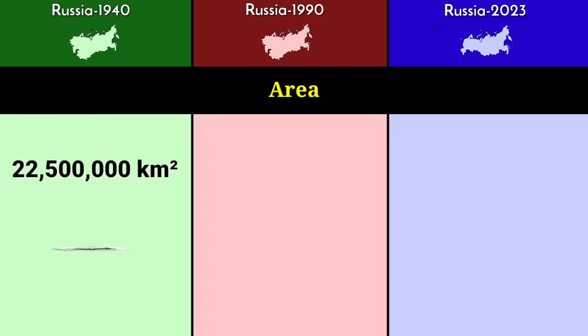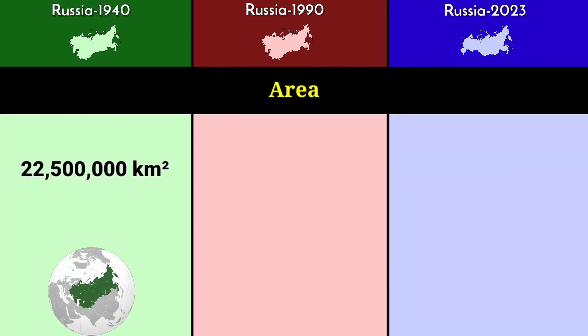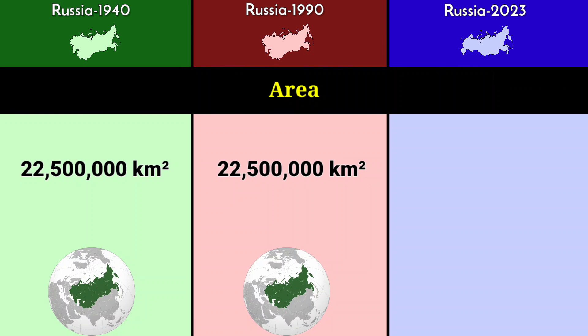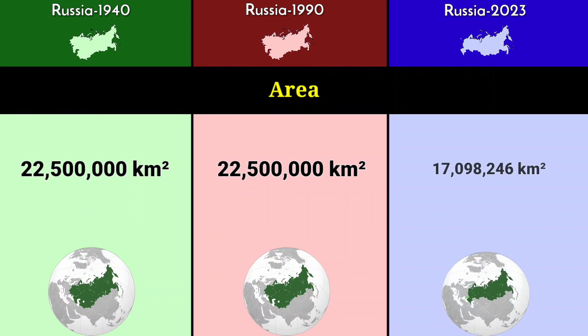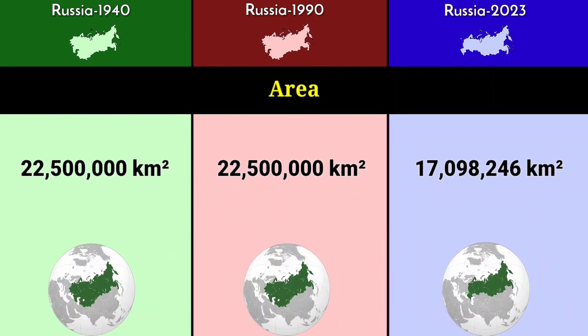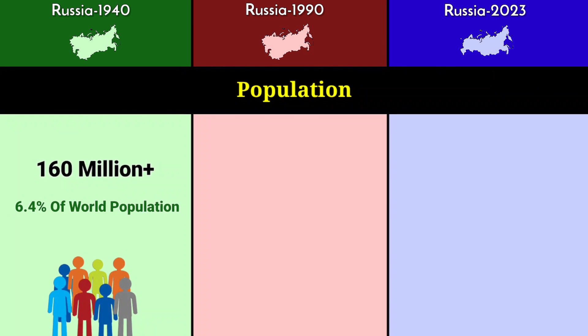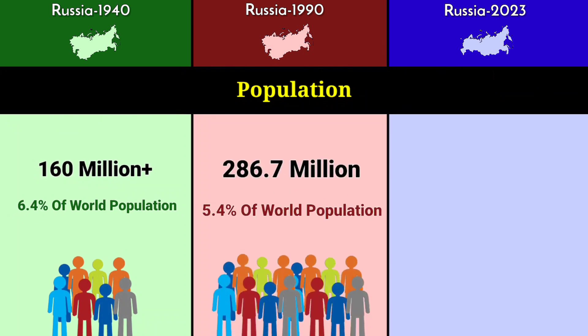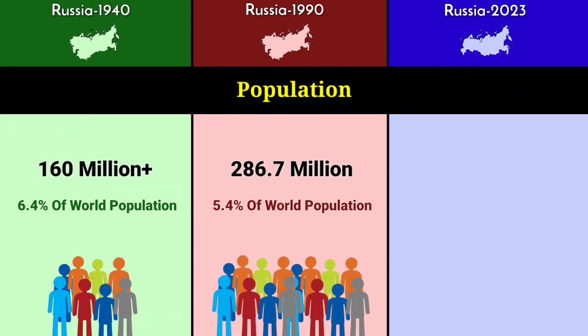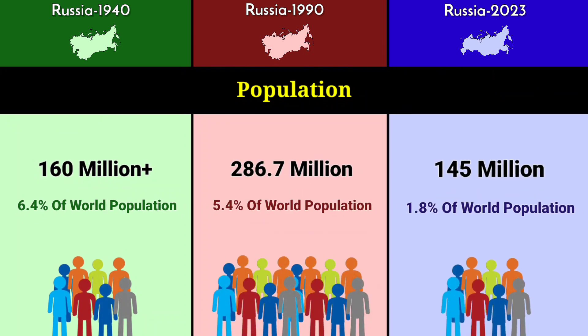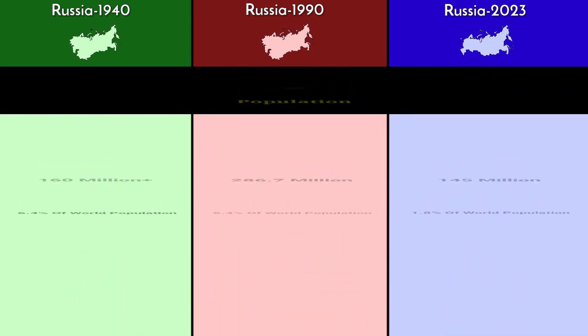Area: 22.5 million square kilometers in 1940, 22.5 million square kilometers in 1990, and 17.09 million square kilometers in 2023. Population: 160 million in 1940, 286.7 million in 1990, and 145 million in 2023.